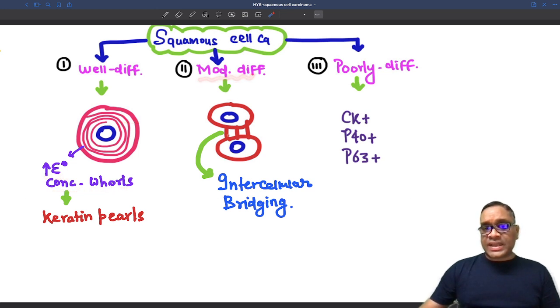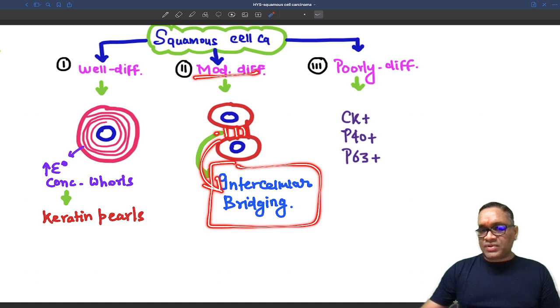Moderately differentiated Squamous Cell Cancer will be having cytoplasmic bridging, so that is called intercellular bridging. It is for moderately differentiated.